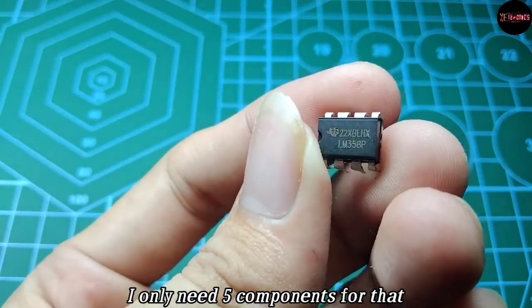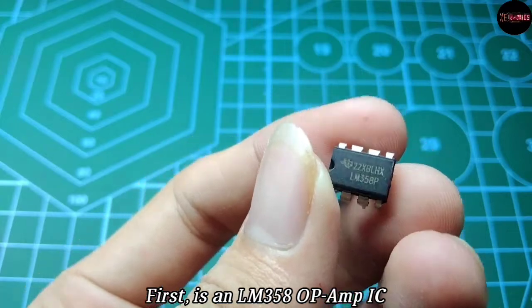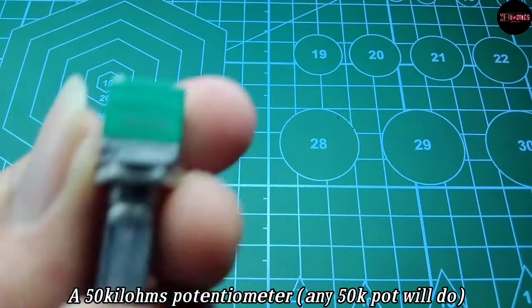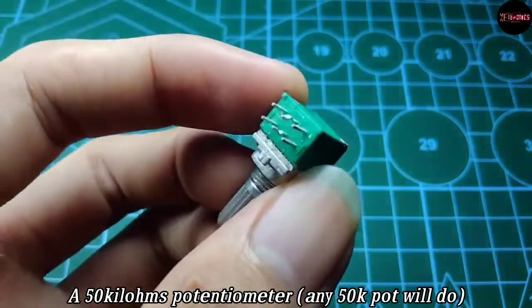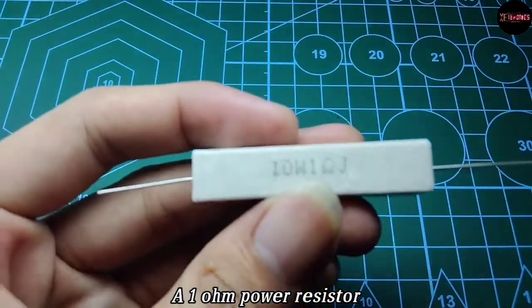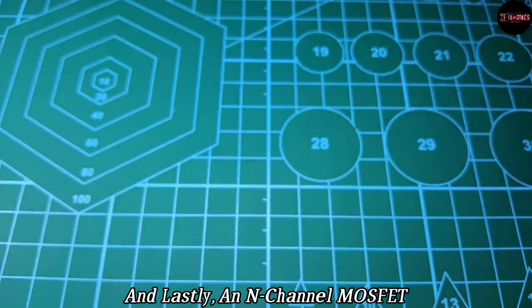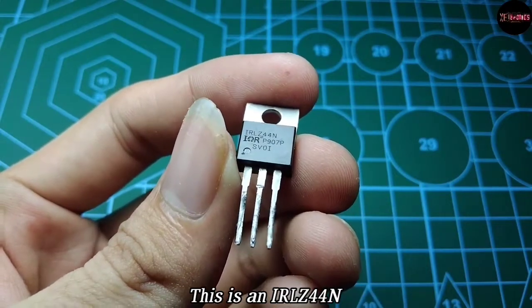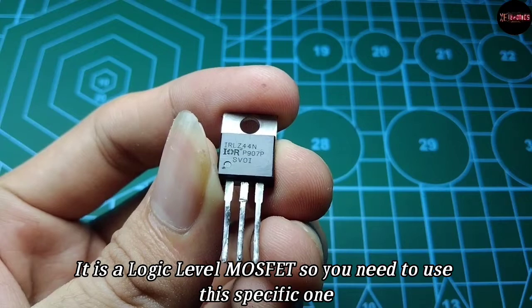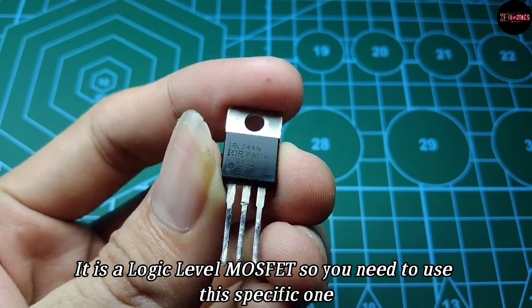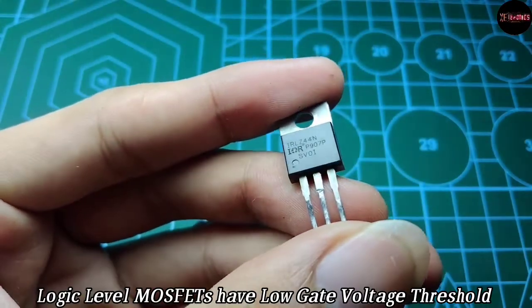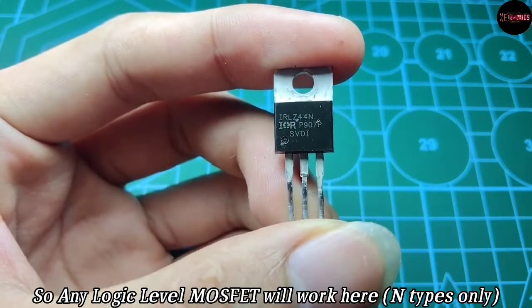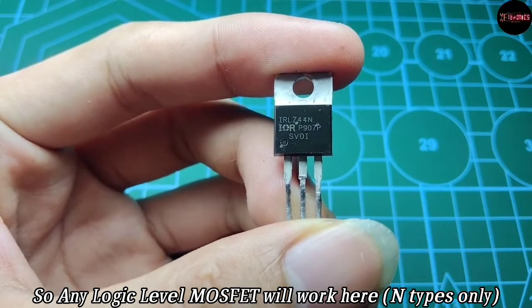First is an LM358 op-amp IC, a 47 kilo-ohm resistor, a 50 kilo-ohm potentiometer, a 1 ohm resistor, and lastly an N-channel MOSFET. This is an IRLZ44N, it is a logic level MOSFET, so you need to use this specific one. Logic level MOSFETs have low gate voltage threshold, so any logic level MOSFET will work here.